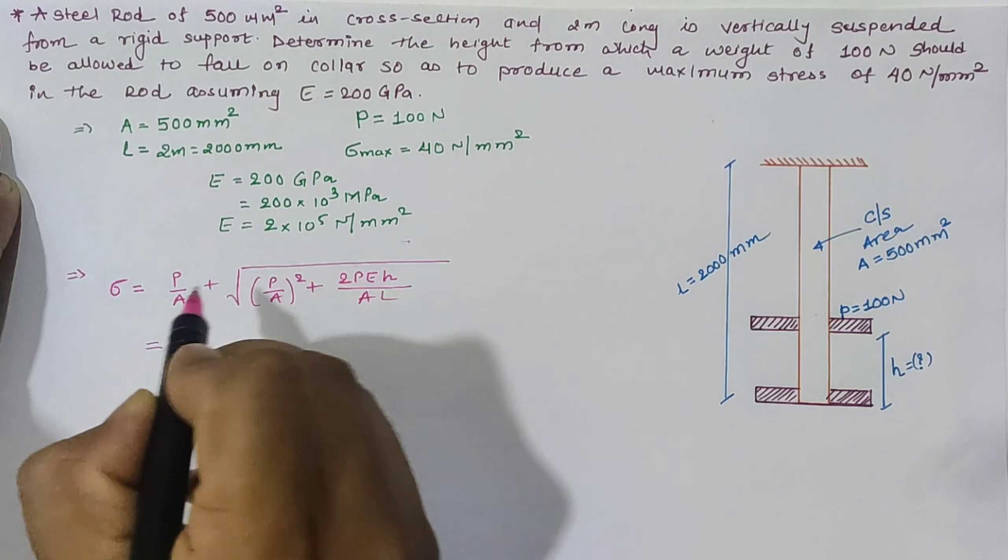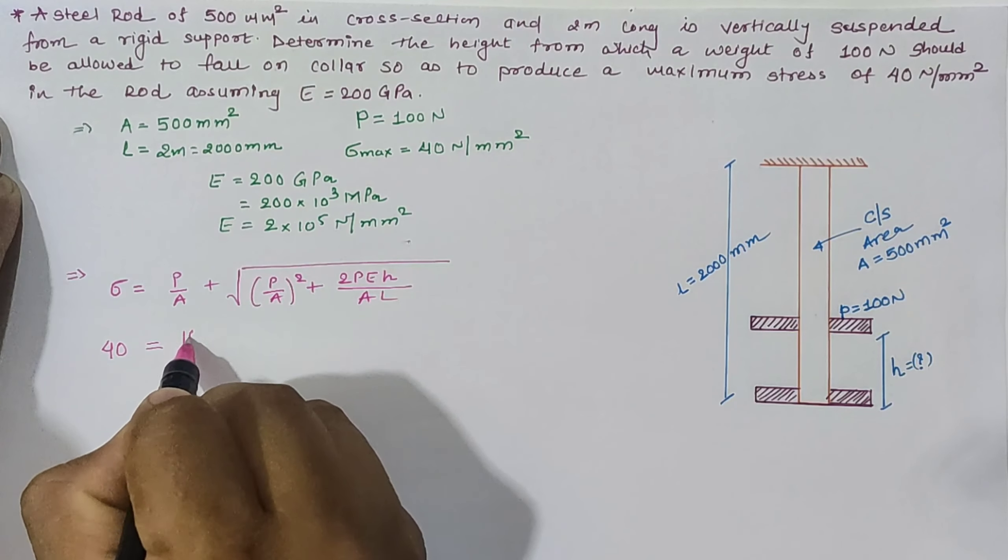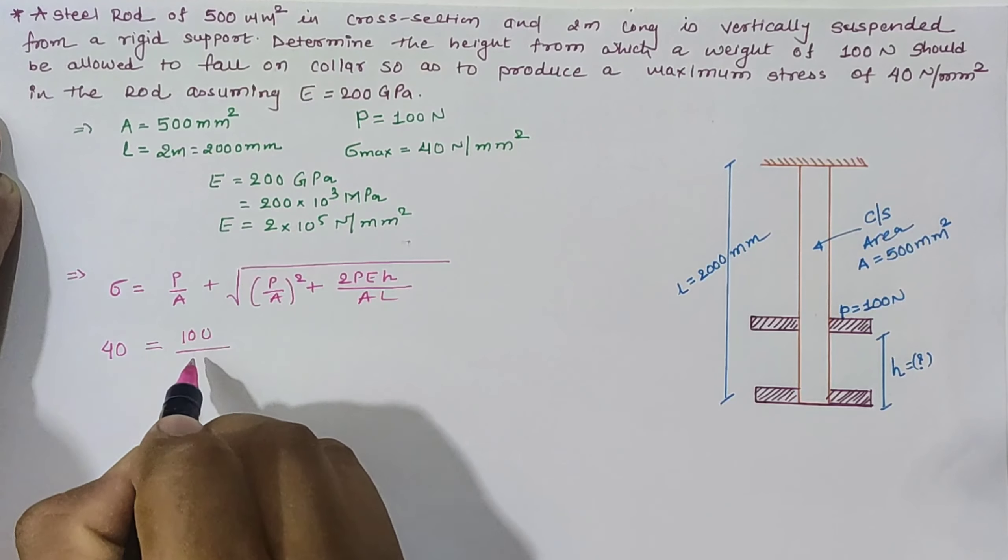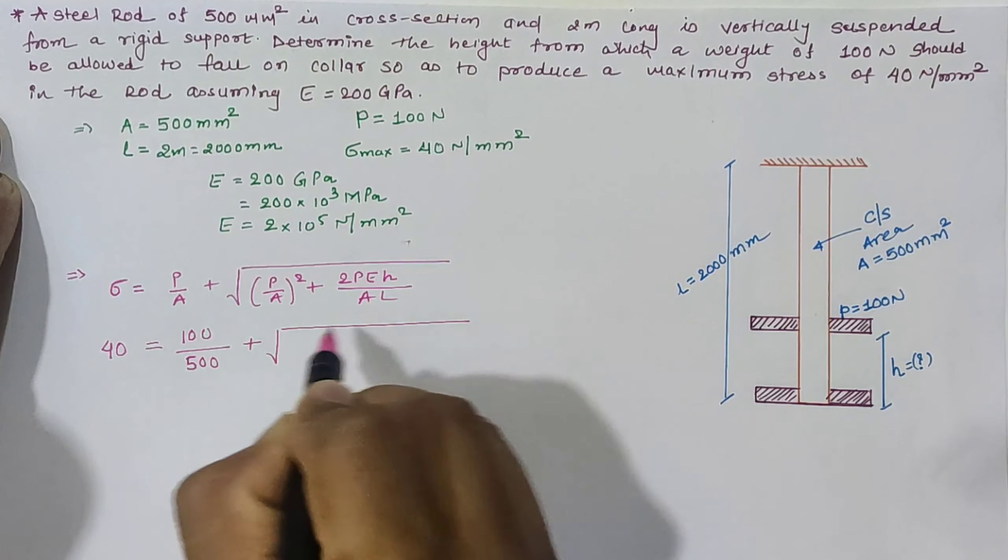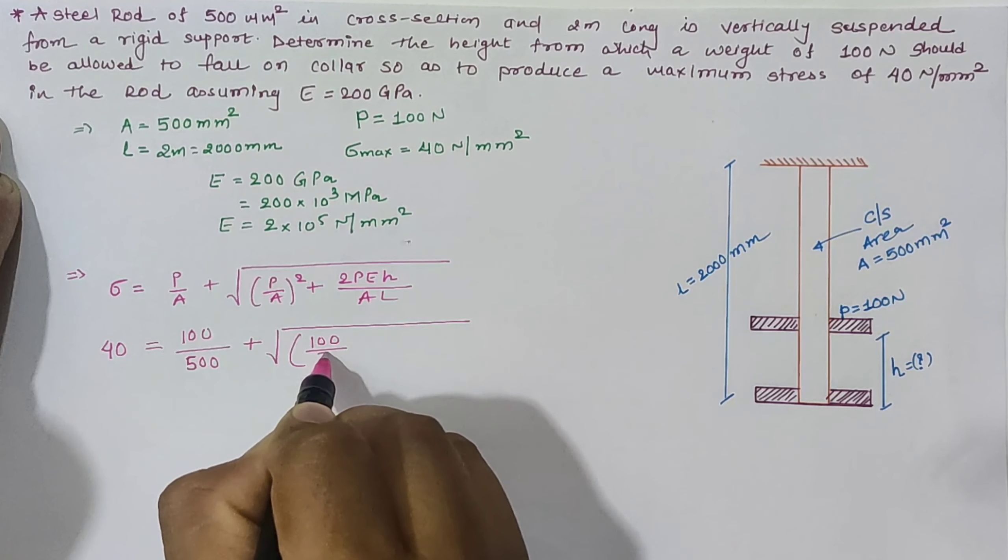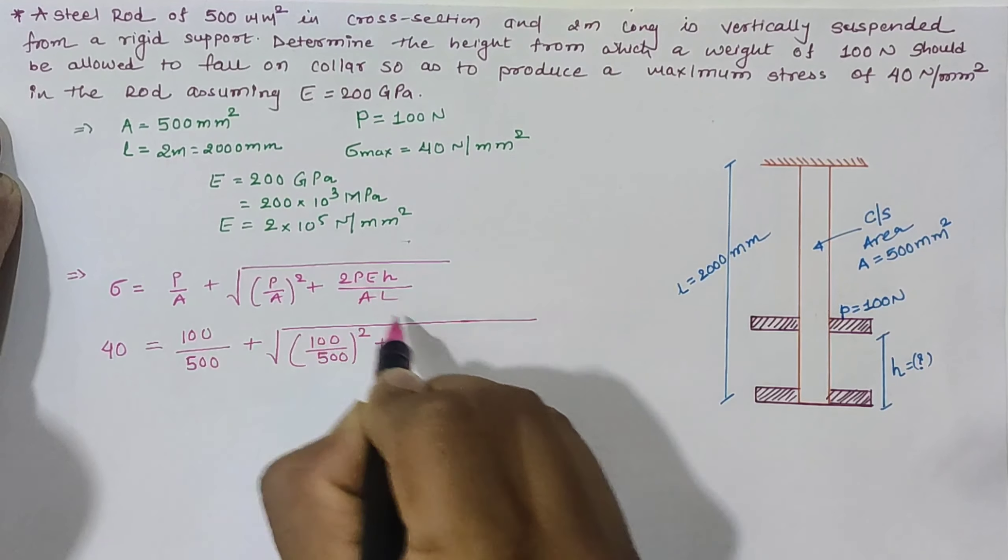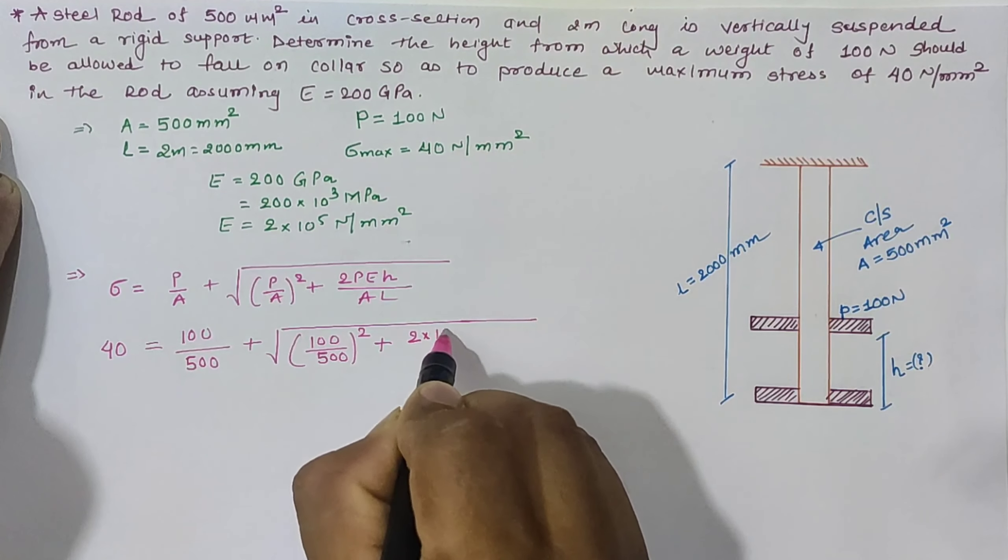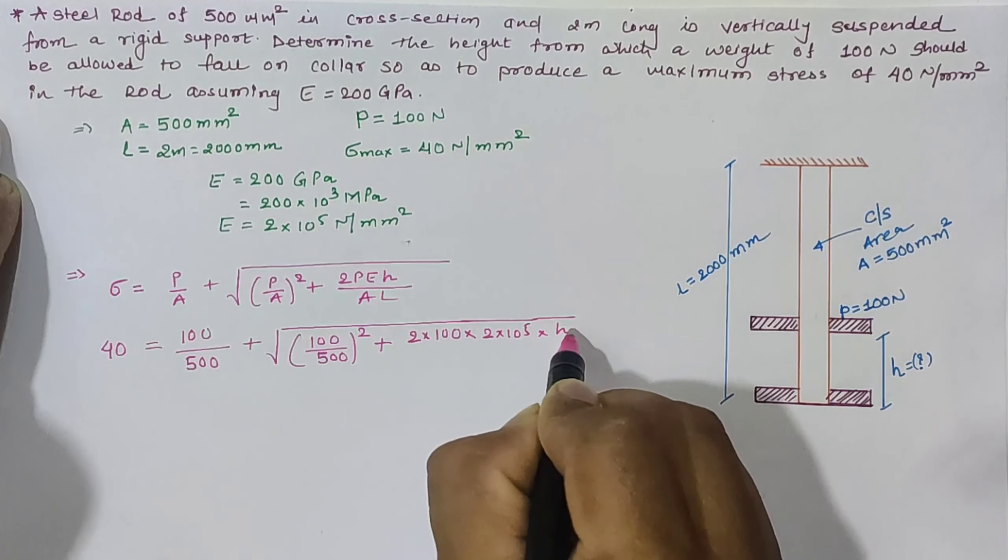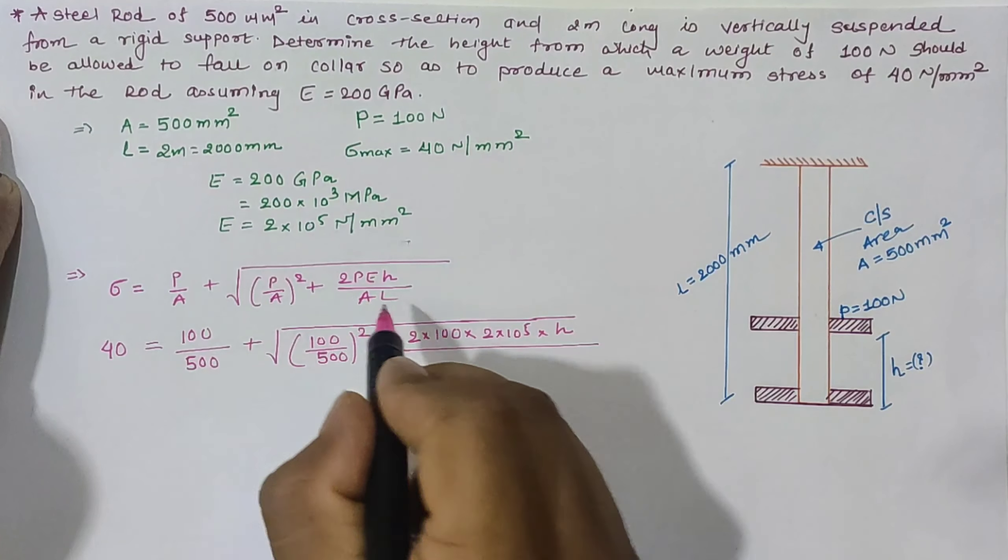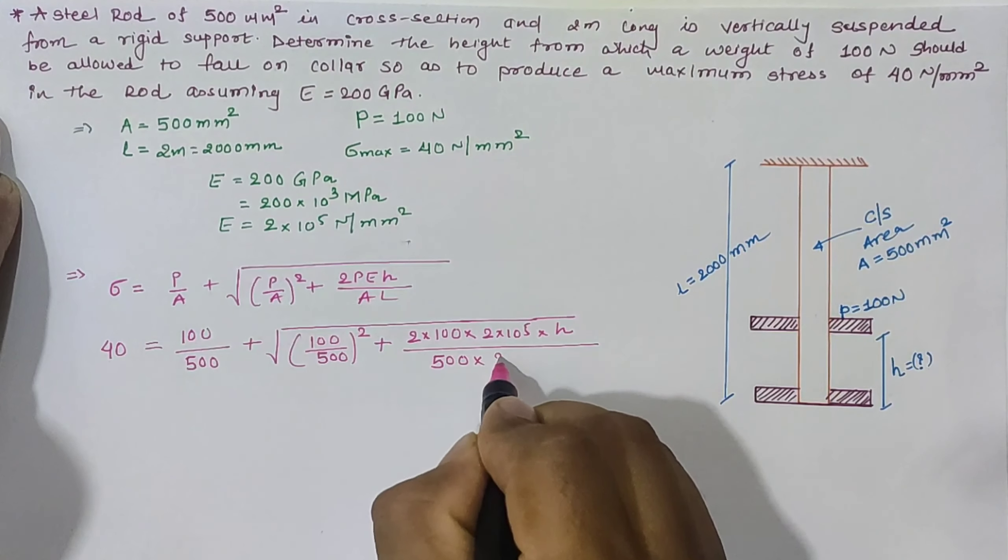Putting all the values: sigma = 40 N/mm², P = 100N, A = 500, plus square root of (P/A)² plus 2 times (P × E × H)/(A × L), where E = 2×10⁵, area = 500, and length = 2000 mm.